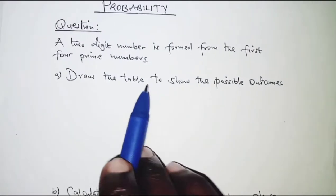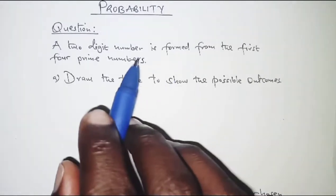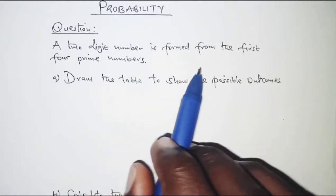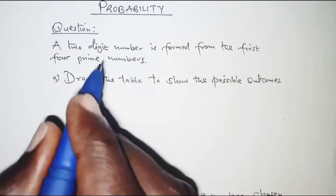So first of all what you're required to get in part A is the sample space. So we are told that these two-digit numbers are formed from the first four prime numbers.